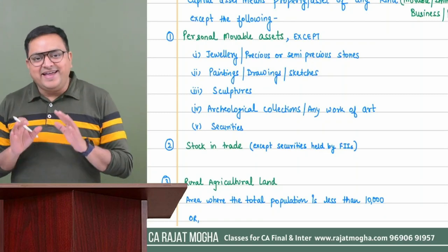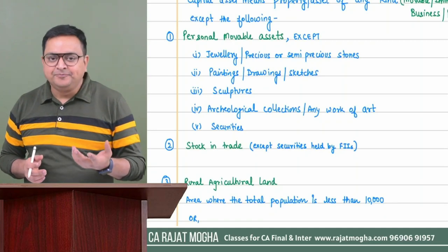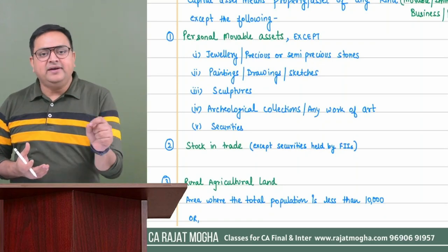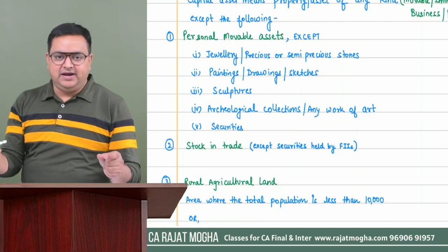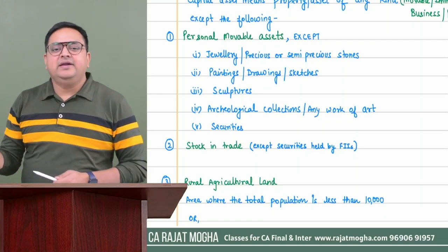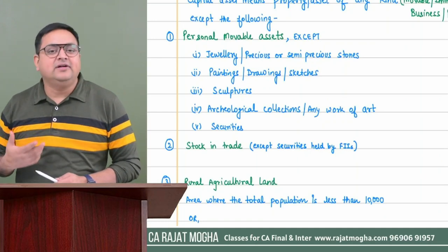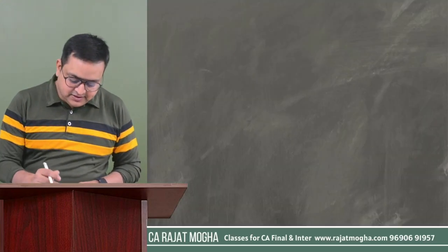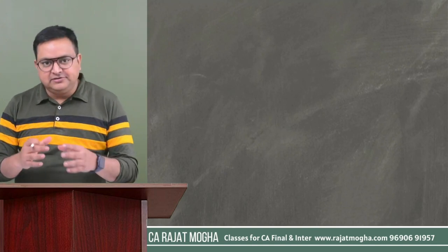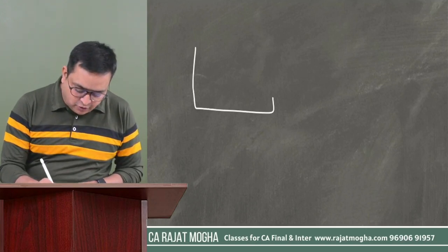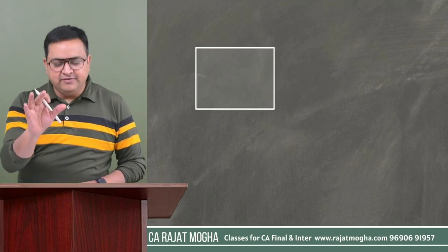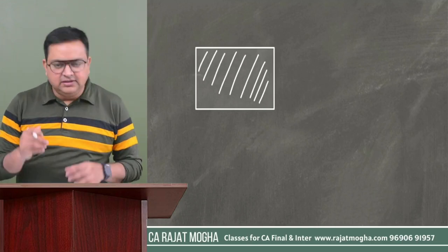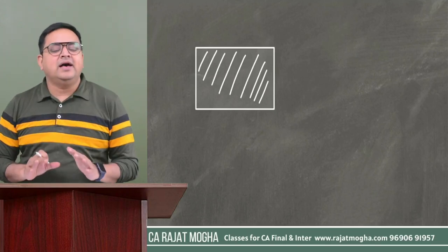Rural agriculture land is not a capital asset. Agriculture income is not taxable, but selling land is not agriculture income. If you transfer agriculture land, capital gain may arise depending on whether it's urban or rural agriculture land. If it is rural agriculture land, capital gain will not arise. The question then is: what is rural agriculture land? It depends on its location relative to municipal limits and population.